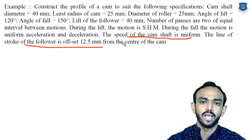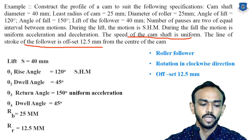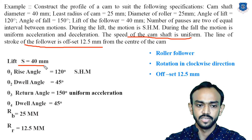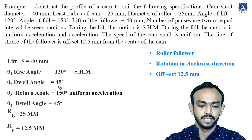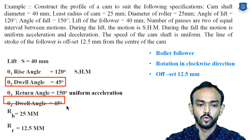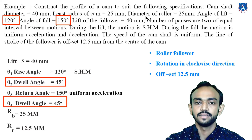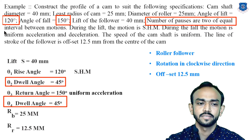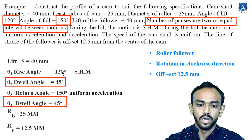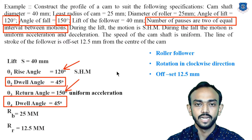The line of stroke is offset by 12.5 mm from the center of the cam. Now, theta-2 and theta-4 are not given directly. Rise angle is 120°, return angle is 150°, and there are two equal dwell periods. So: 120 + 150 = 270°, and the remaining angle is 90°. Dividing 90 by 2 gives 45°, so theta-2 and theta-4 are both 45°.